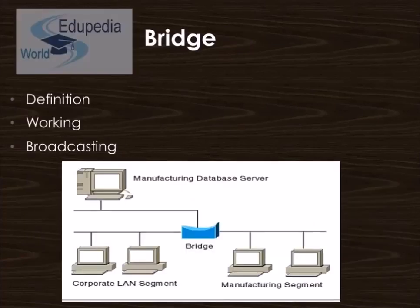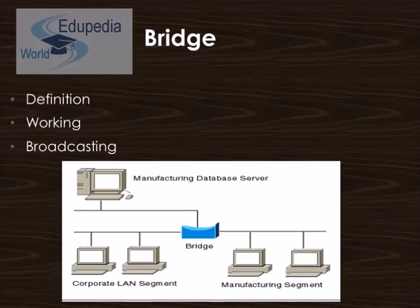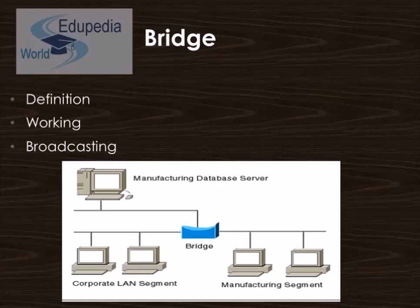Now comes the Bridge. It is a device that connects two local area networks or two segments of the same local area network that use the same protocol or network topology such as Ethernet or Token Ring. It operates at the data link or physical network level of a network, copying a data frame from one network to the next along the communications path. You can envision a bridge as a device that decides whether a message from you is going to a local area network in your building or to one in a building across the street.